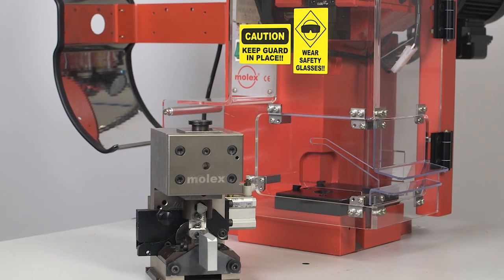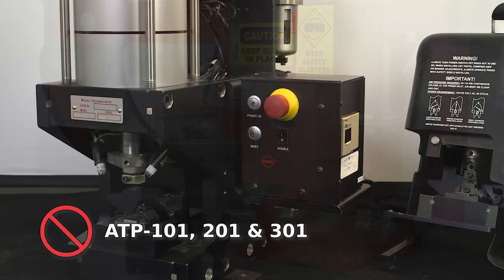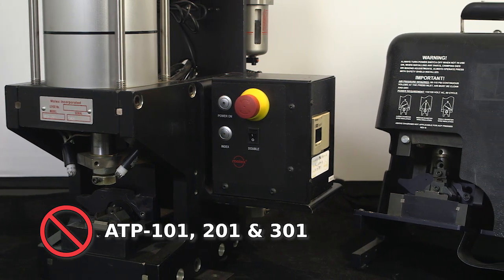This crimp module and press combination replaces the Molex ATP 101, 201,